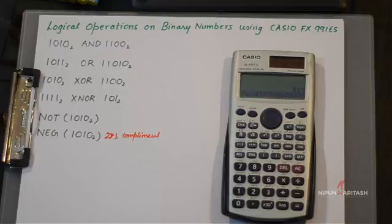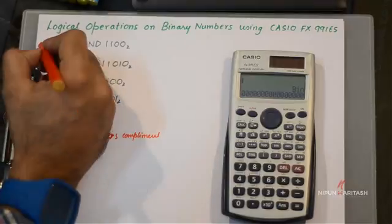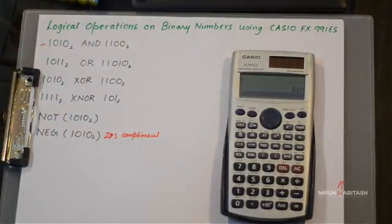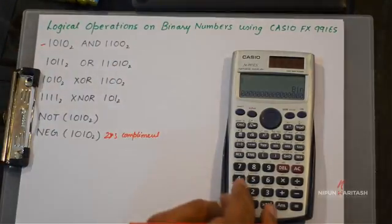Alright! Now let's get going. The first problem is to find AND of two numbers. So I'll write 1010.